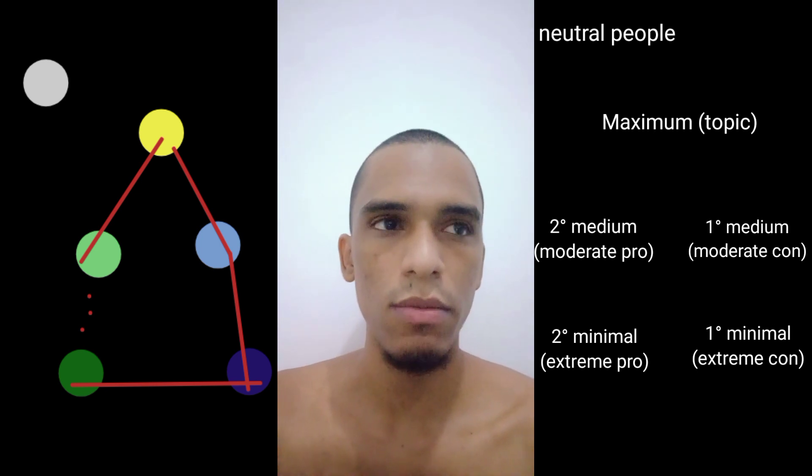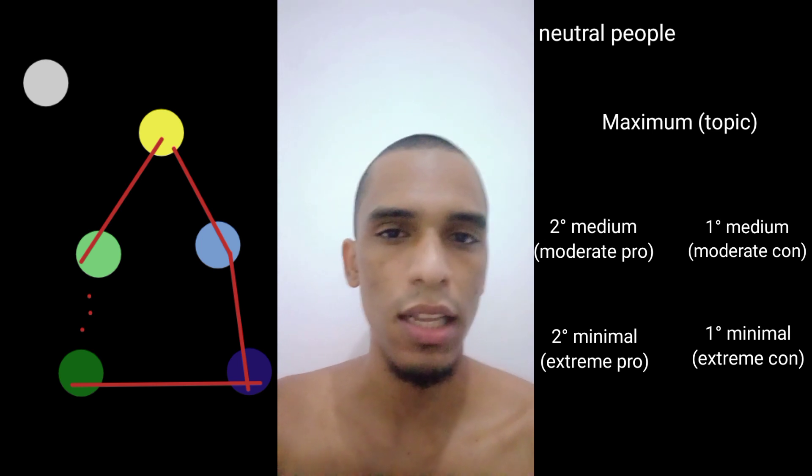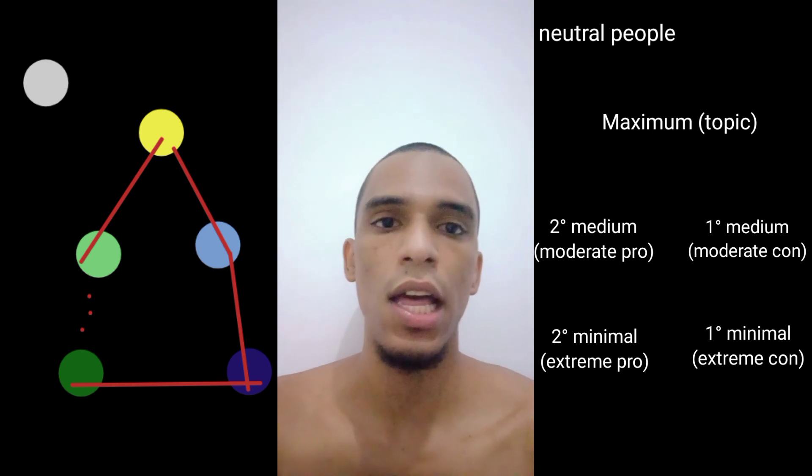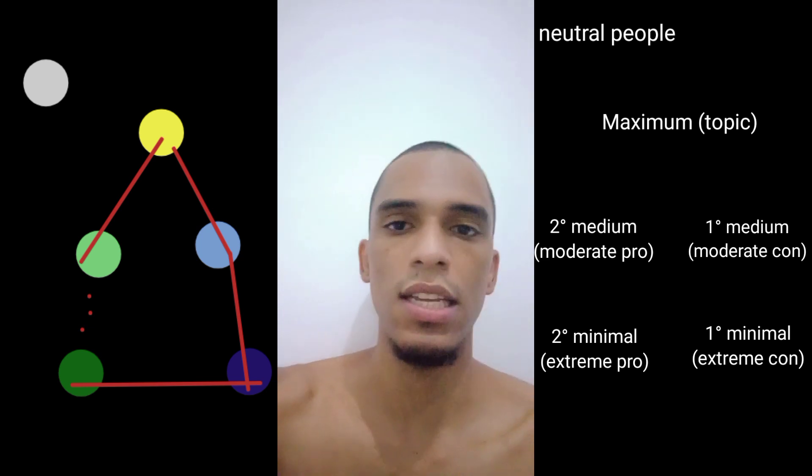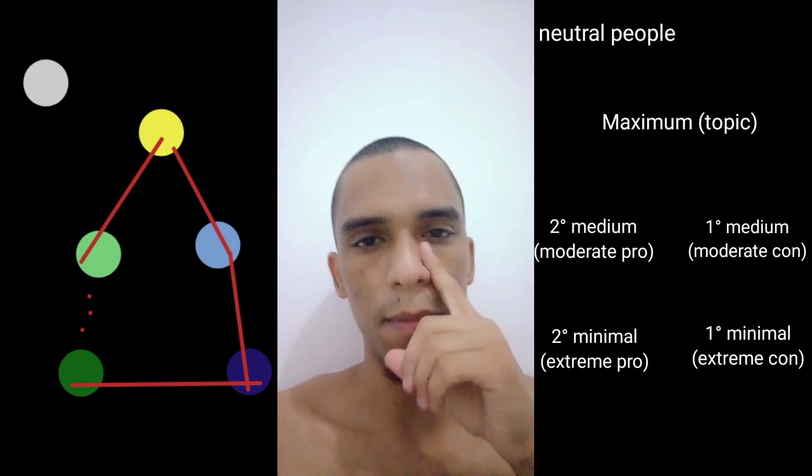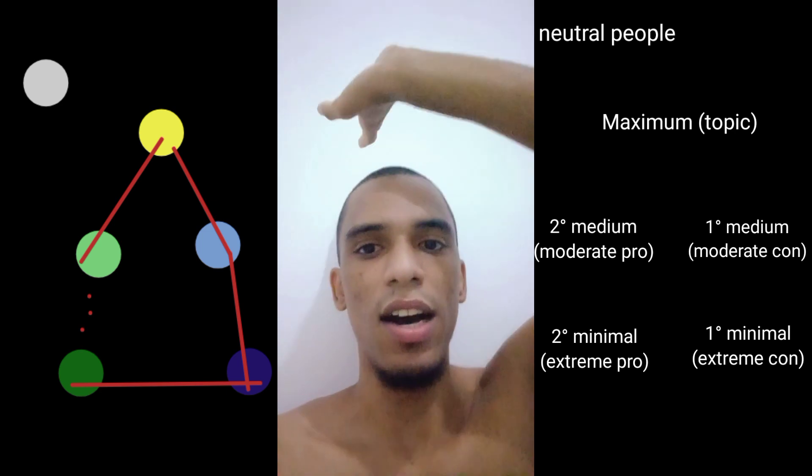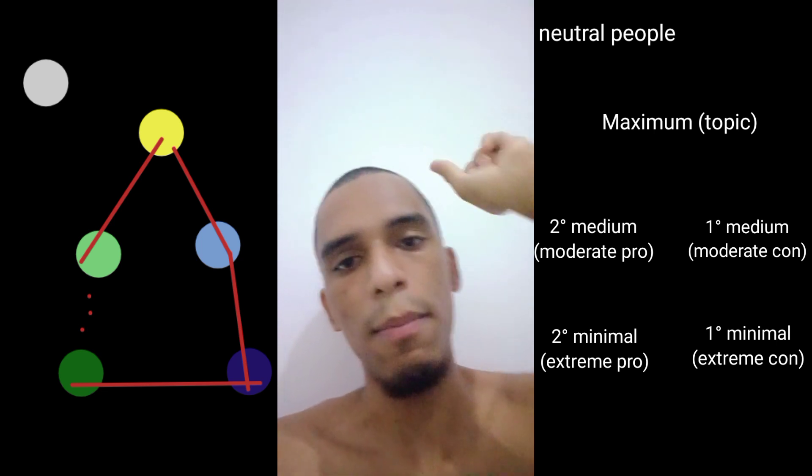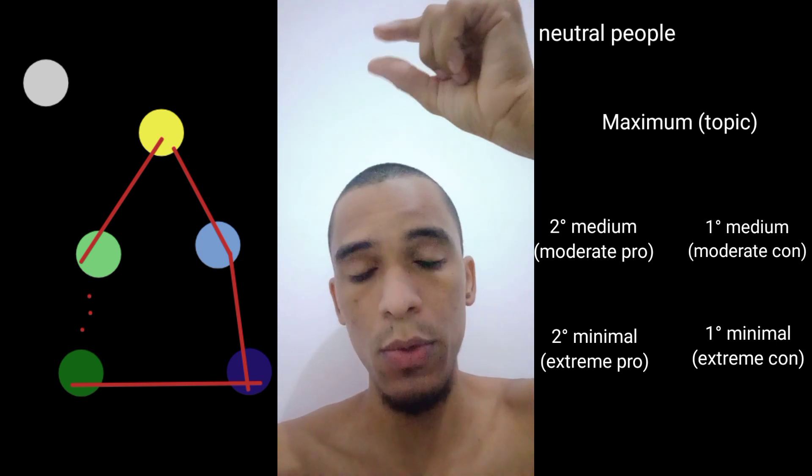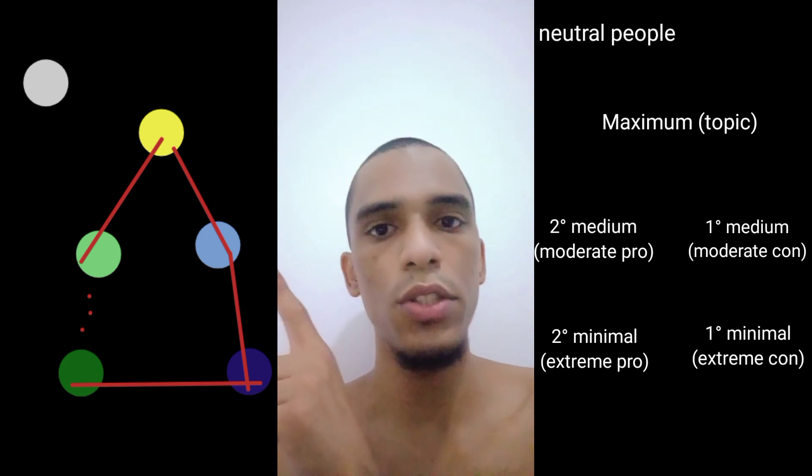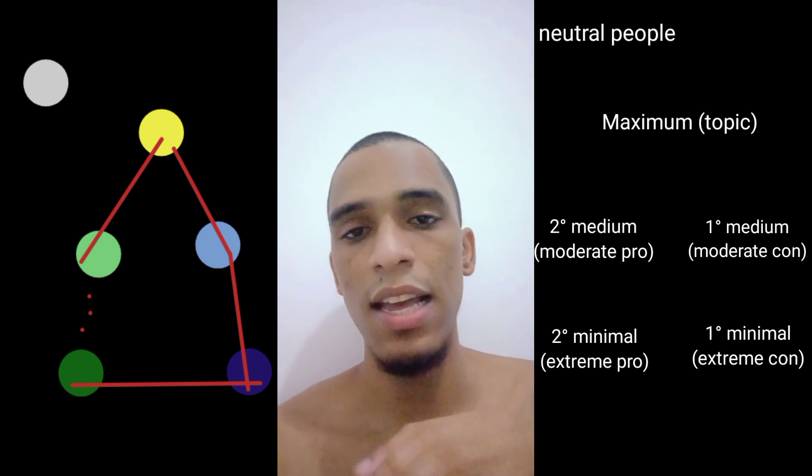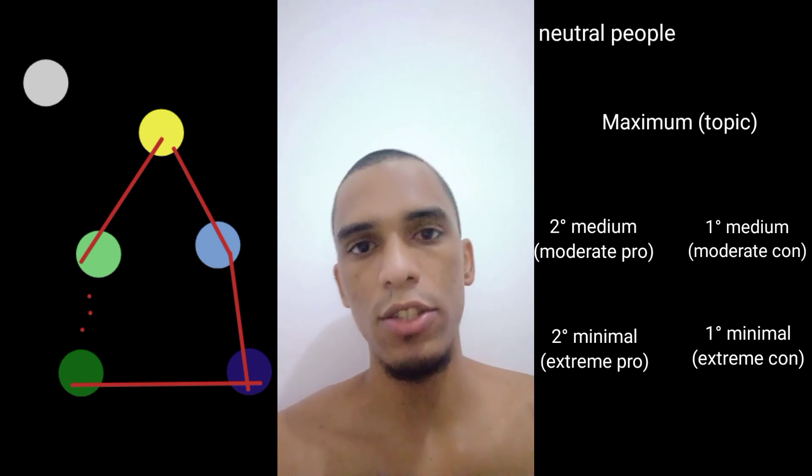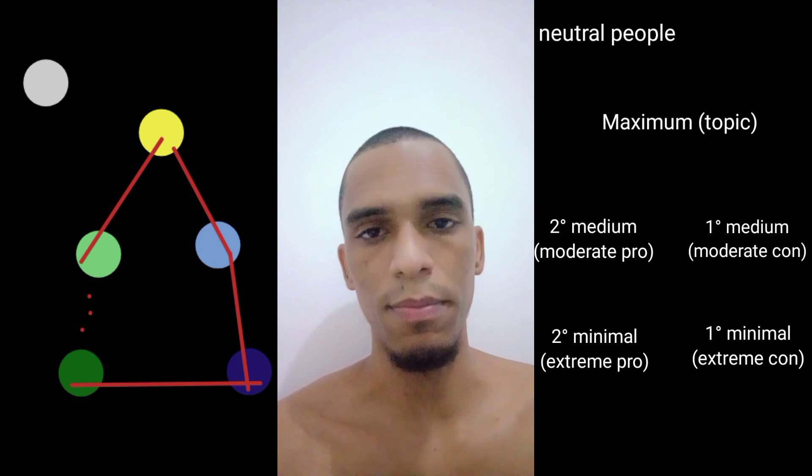Extremist actions will become something normal, and this is where the danger resides. After this, the neutral people will start to know about this subject, the maximum, and will fall into the moderate pro and moderate con, and sometimes straight to the extremes, to the minimal.